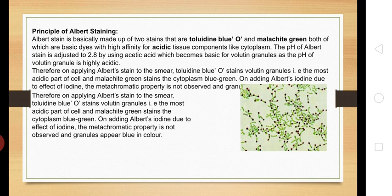After adding Albert's iodine, it is going to enhance the metachromatic property. I said that metachromatic dyes have the property to change the color of the stain. We add iodine so that this metachromatic dye will not change its color further — malachite green and toluidine blue will maintain their colors.